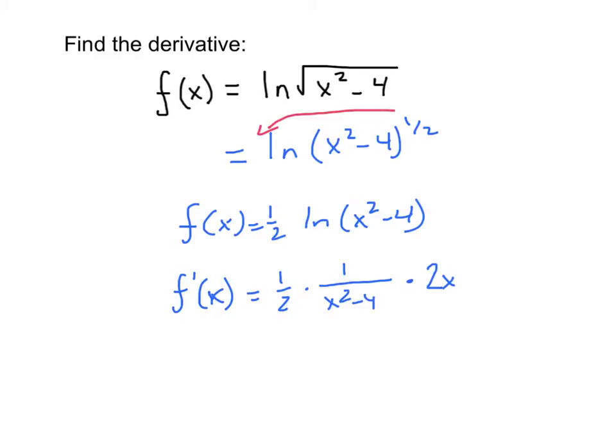Simplifying this, the 1/2 and the 2 cancel and we end up with x over x squared minus 4. And so that is the derivative of the natural log of the square root of x squared minus 4.